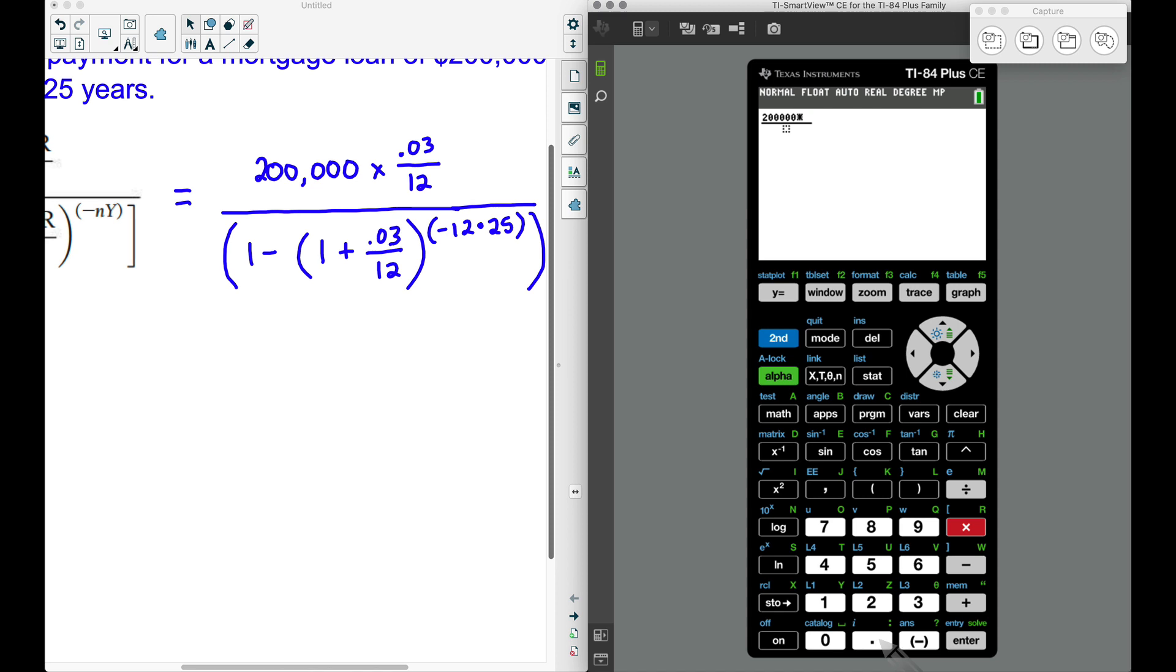I'm doing 200,000 times 0.03. For this fraction bar, you don't have to use another fraction - we can simply use division here. When I press division, notice it gives a little slash, and we put our 12. This is our entire numerator. Now we can press the down arrow to go to the bottom.